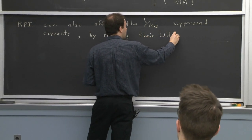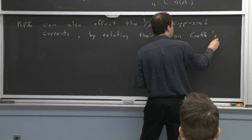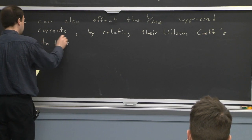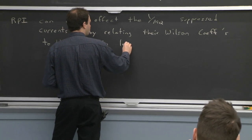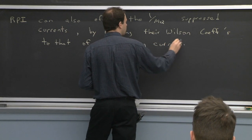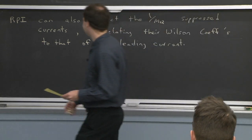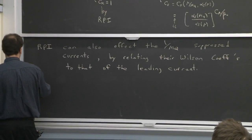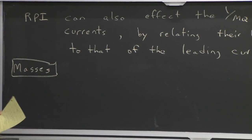What happens in this case is that the leading order operator had a Wilson coefficient, and the Wilson coefficients of the subleading operators get related to that of the leading operator. I may give you a problem on that on your next problem set. Rather than go through that, I want to talk about some observables where these operators play a role — from that one example of reparametrization invariance, you'd be able to do other examples.